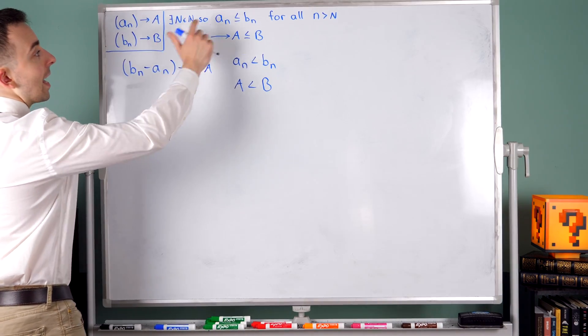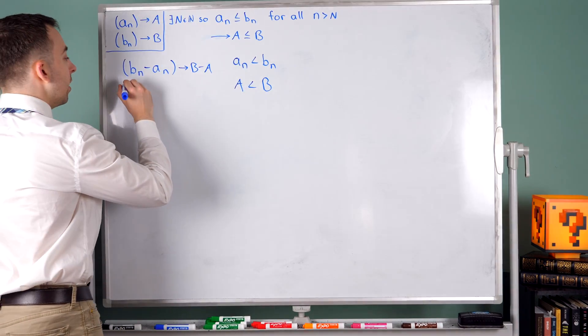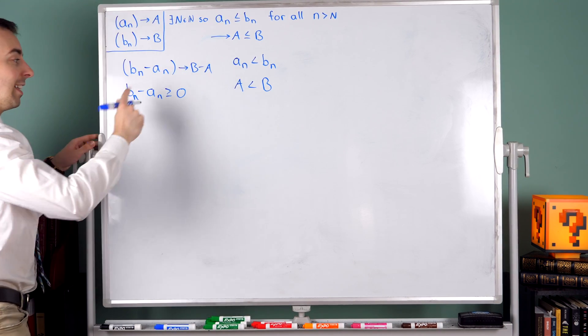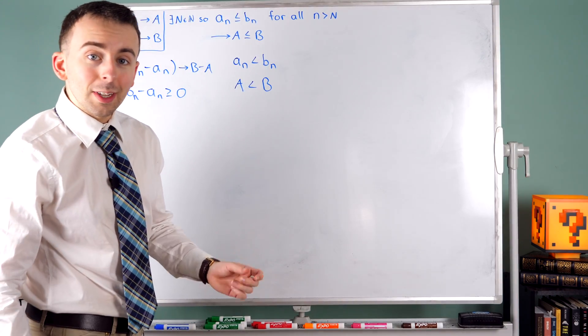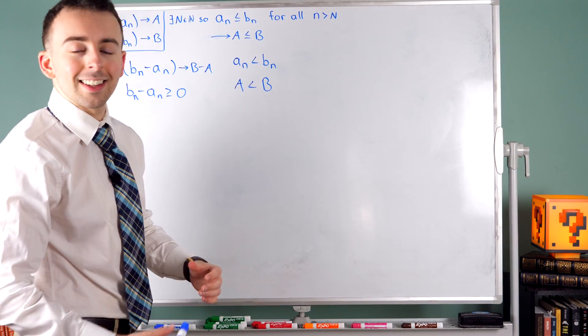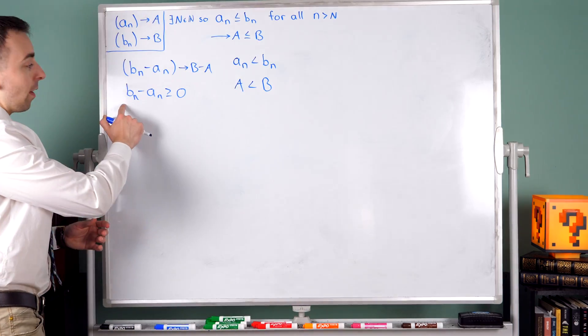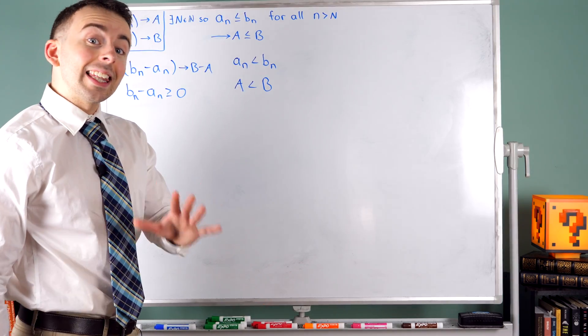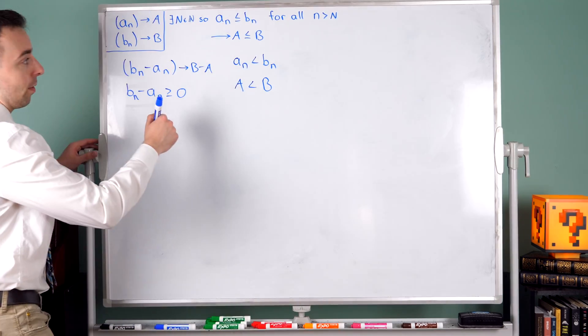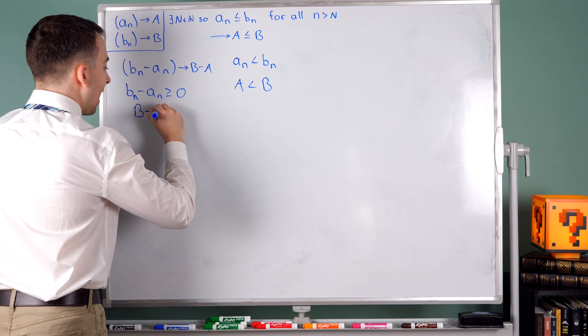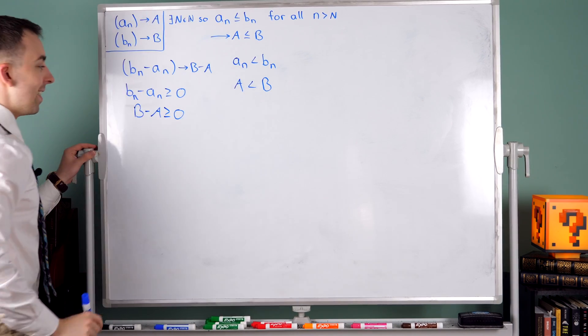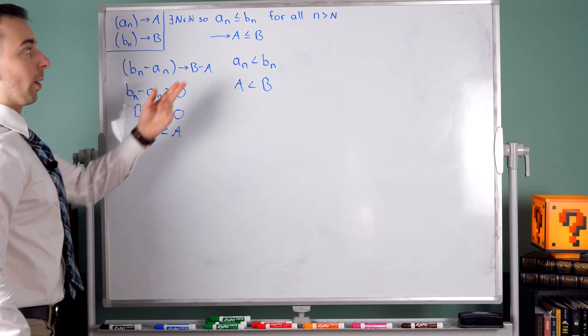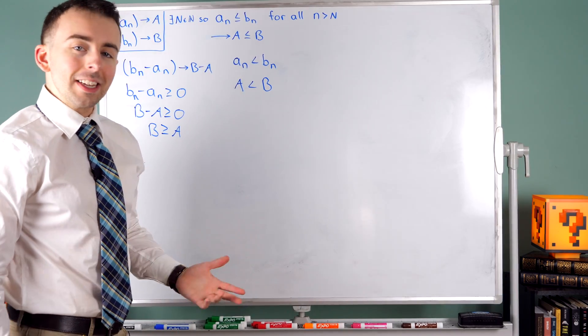So Bn minus An converges to B minus A. But we also know, since every term An is less than or equal to every term Bn, we know that Bn minus An is non-negative. It's at least zero. And we also proved in that previously mentioned lesson about the order limit laws, that if every term of a sequence is non-negative, then if it has a limit, that limit is also non-negative.